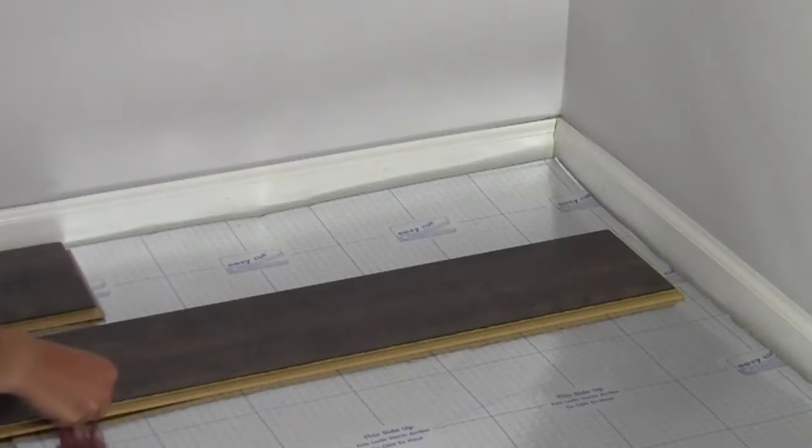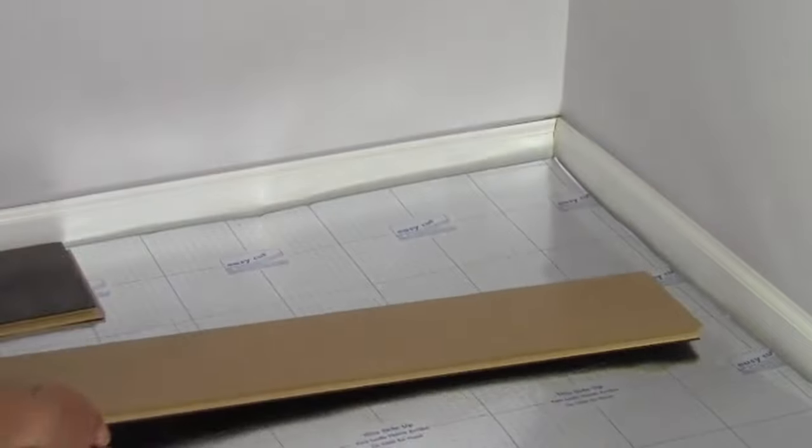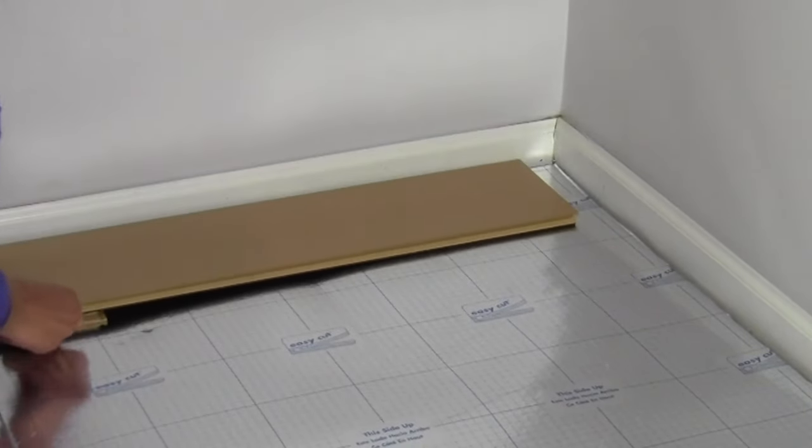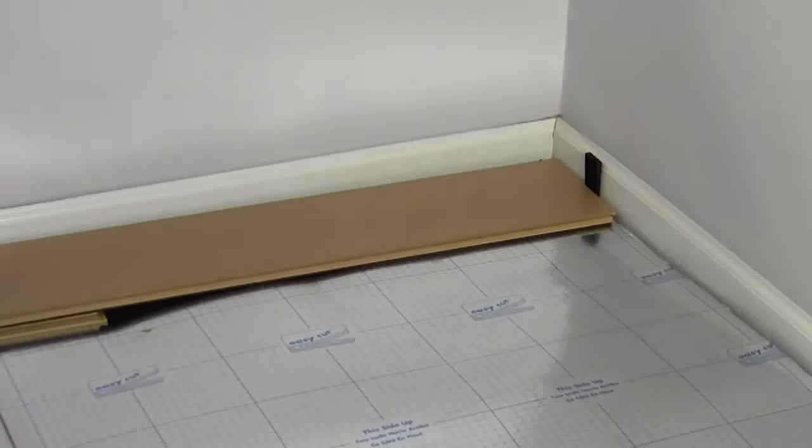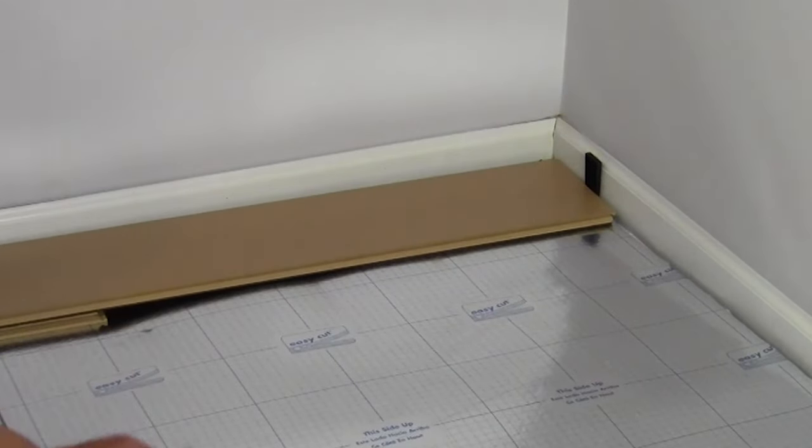When you get to the end of the row, turn a new plank upside down and over to mark the correct length of the gap you'll be filling. Remember to first place those spacers in there so the size is accurate.